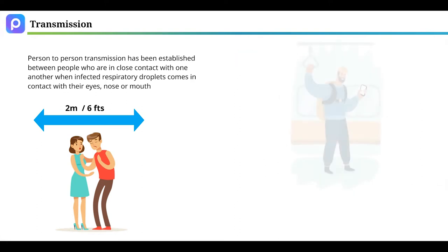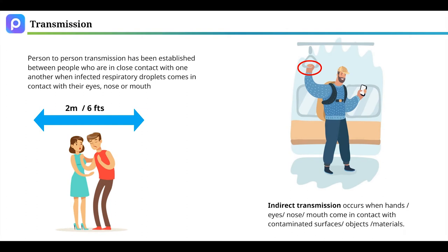Indirect transmission occurs when the hands, eyes, nose, or mouth come in contact with contaminated surfaces, objects, or materials.